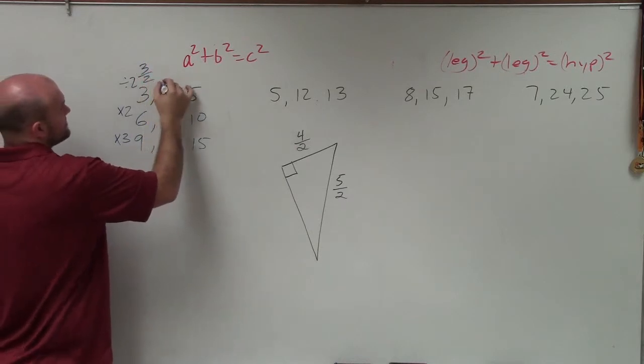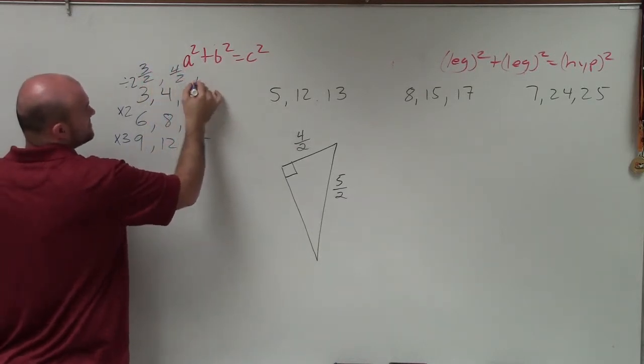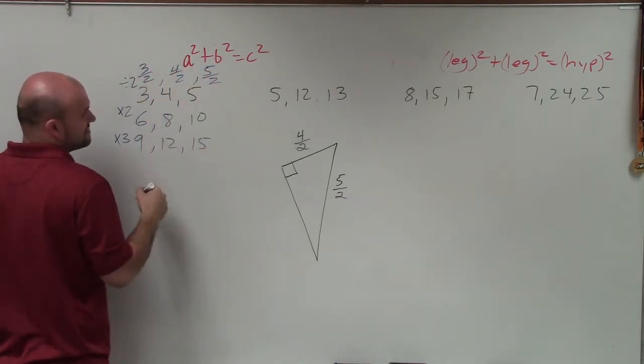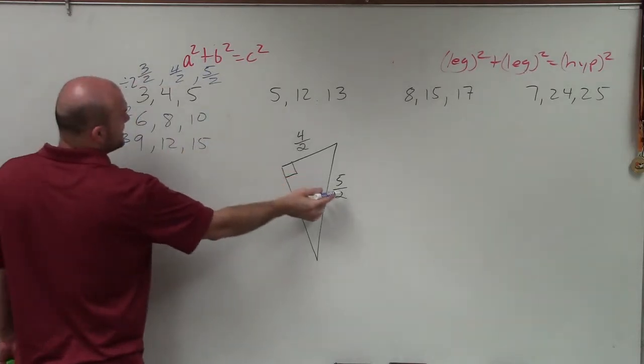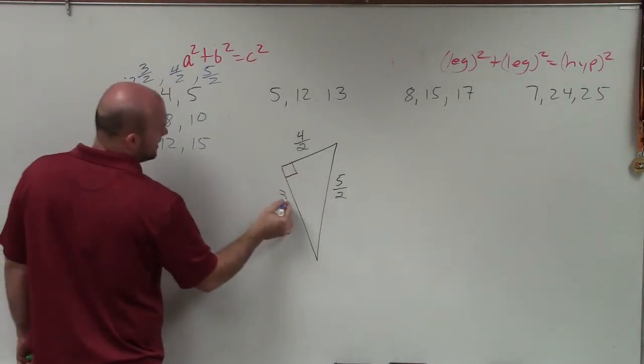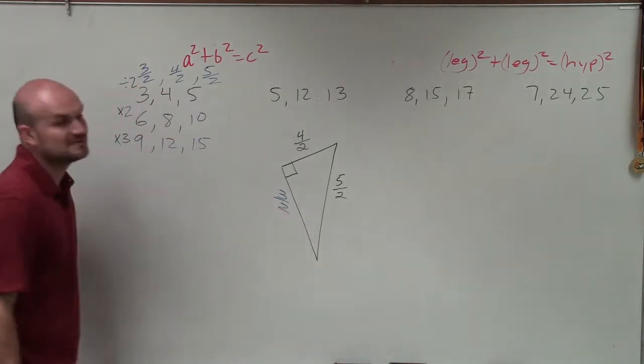So therefore this would be 3 halves, 4 halves, and 5 halves. Therefore I can simply say, well if that's 5 halves, that's the hypotenuse, that's one leg, then my other leg has to be 3 halves.